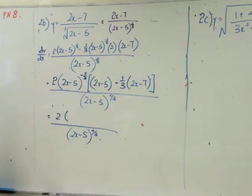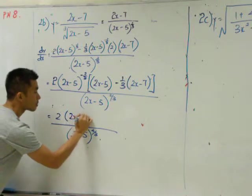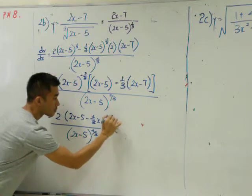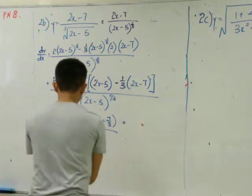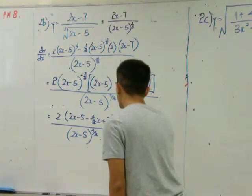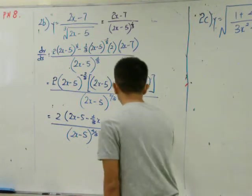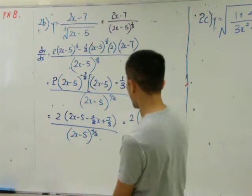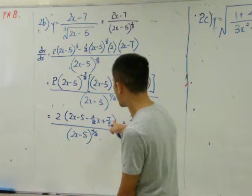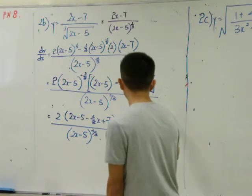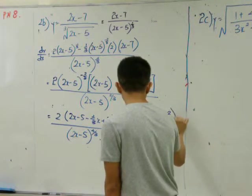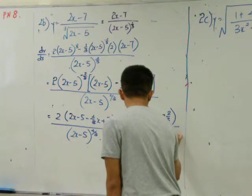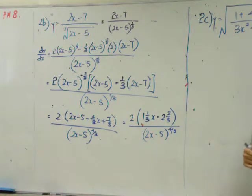Now we just need to simplify the terms inside the bracket. 2(2x-5 minus 1/3(2x-1)). Is this 2 and 1/3?